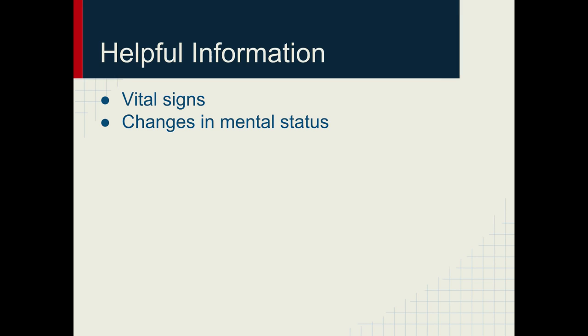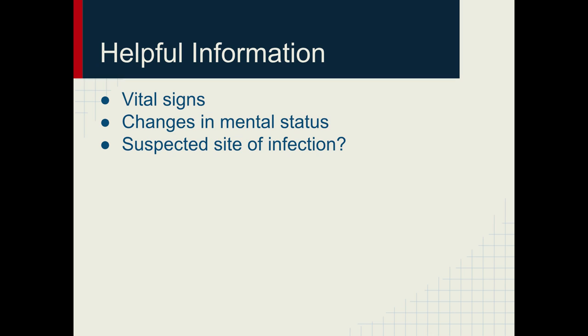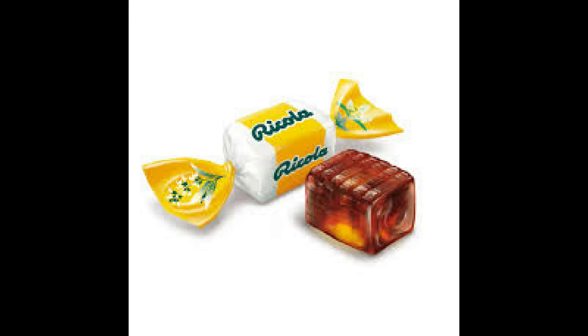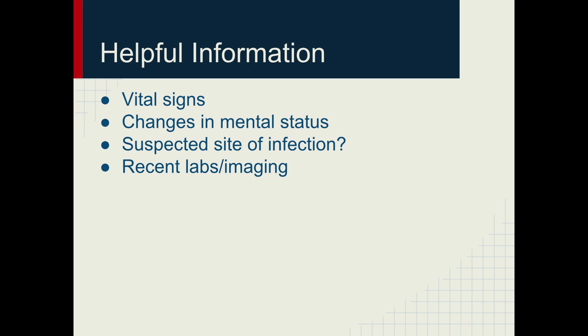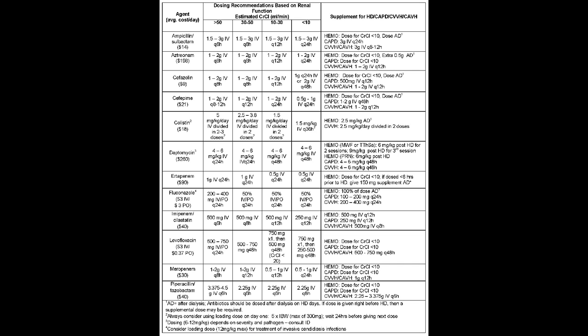Number two: how is the patient's mental status? Again, one of the qSOFA elements is a change in mental status. Number three: where do you think the infection is, and why? Each infection is treated differently, so we need to know other symptoms that could point us to the right diagnosis — for example, if a patient is coughing, they could have pneumonia. Number four: has the patient had any recent labs and imaging? We need to know if someone else has already started a workup for the infection. Some antibiotics need to be adjusted based on the patient's renal function, so it's helpful to have that information, along with the patient's most recent weight.